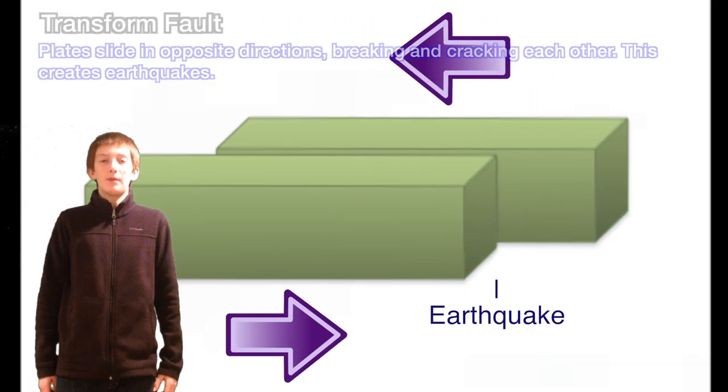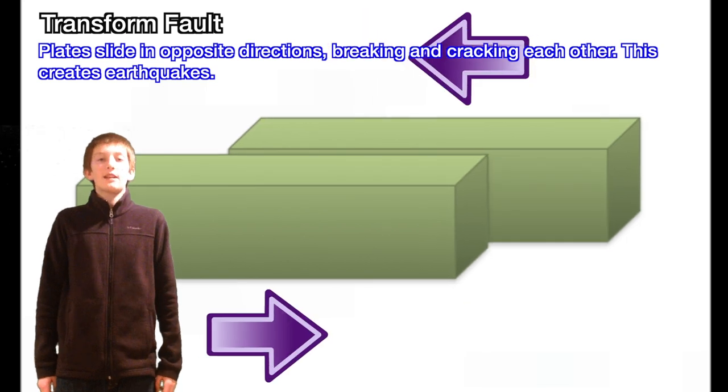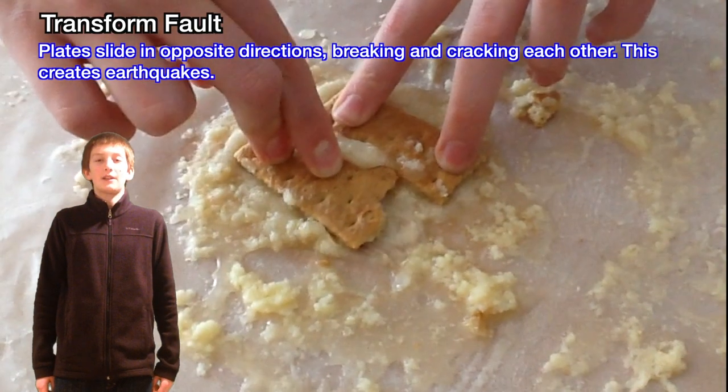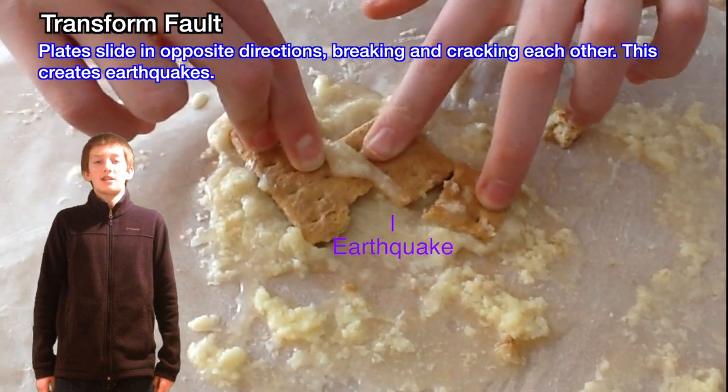The next type of plate boundary is a transform fault boundary. Transform fault boundaries are when two plates slide by each other, often cracking and causing massive earthquakes.